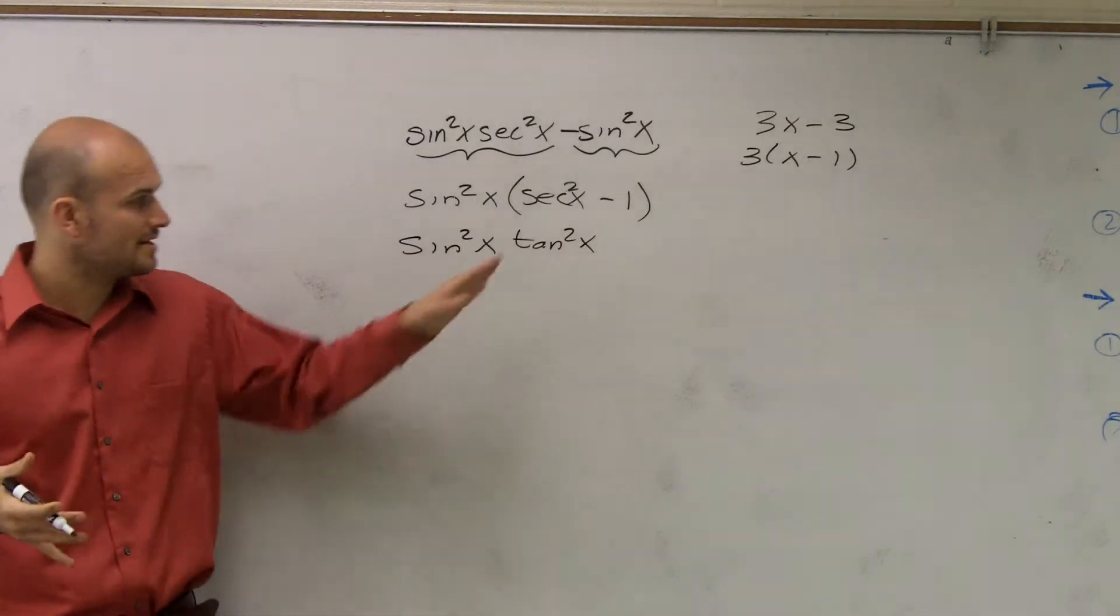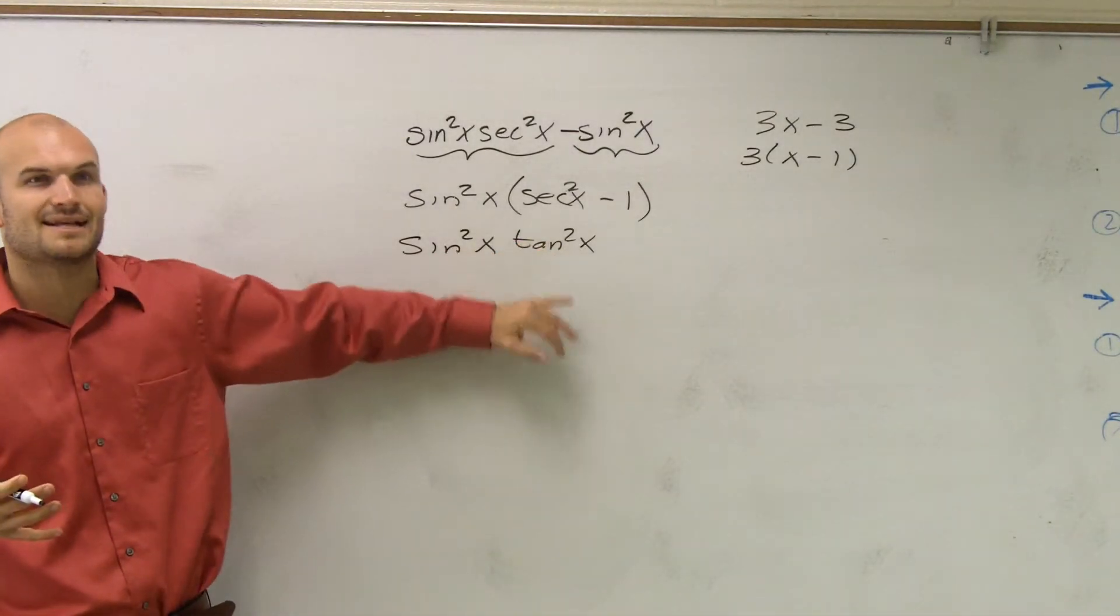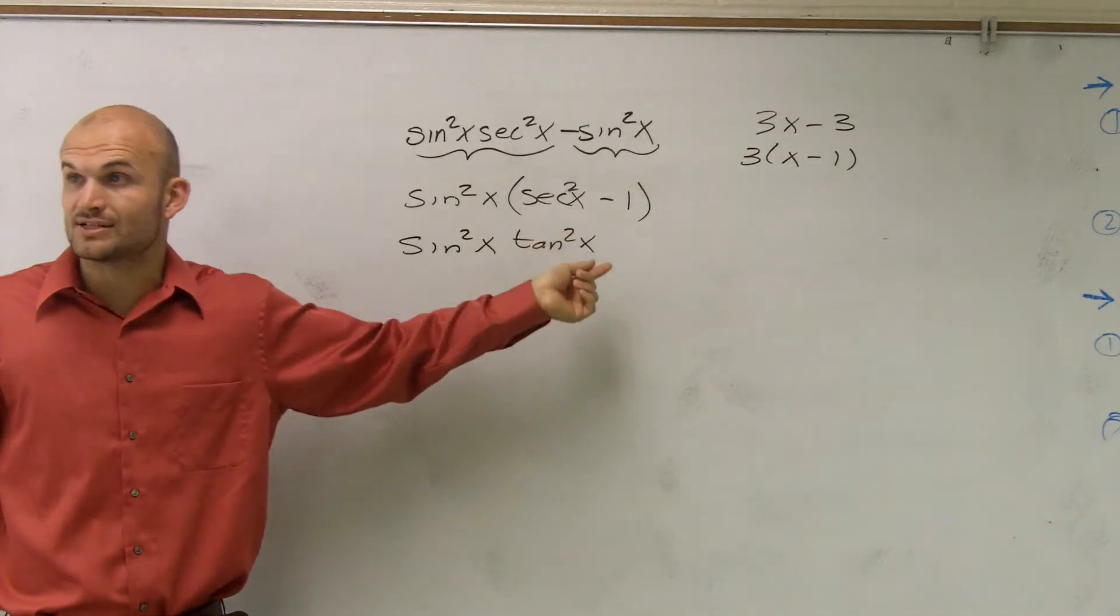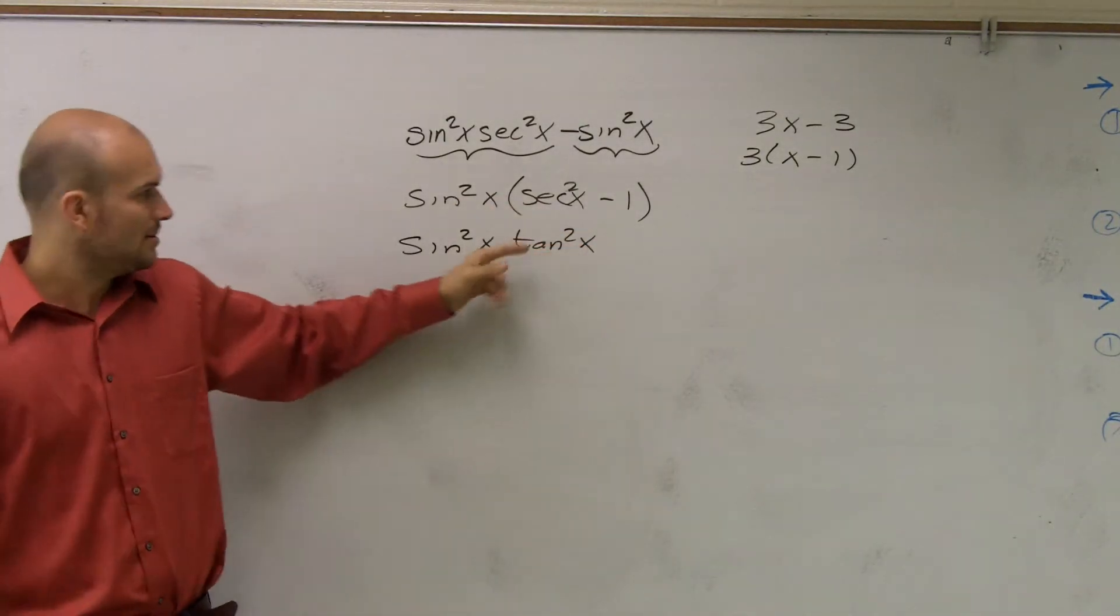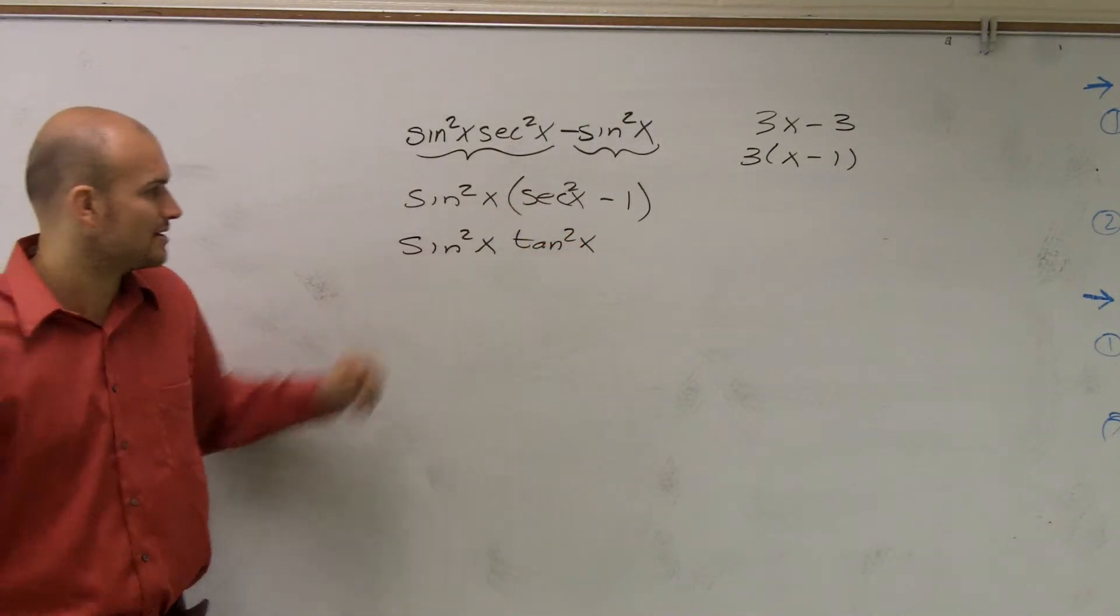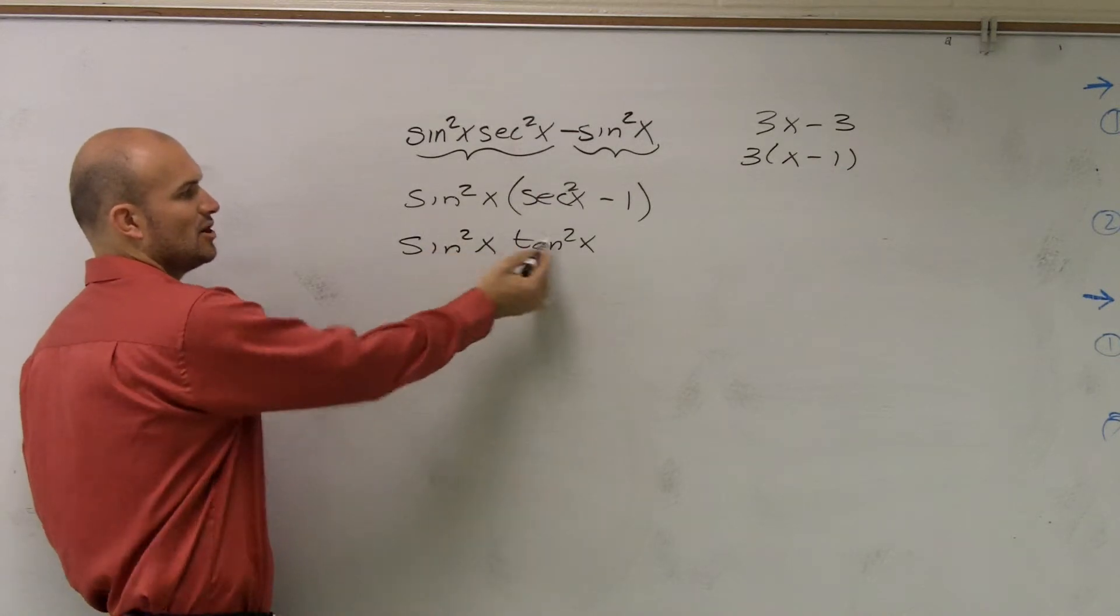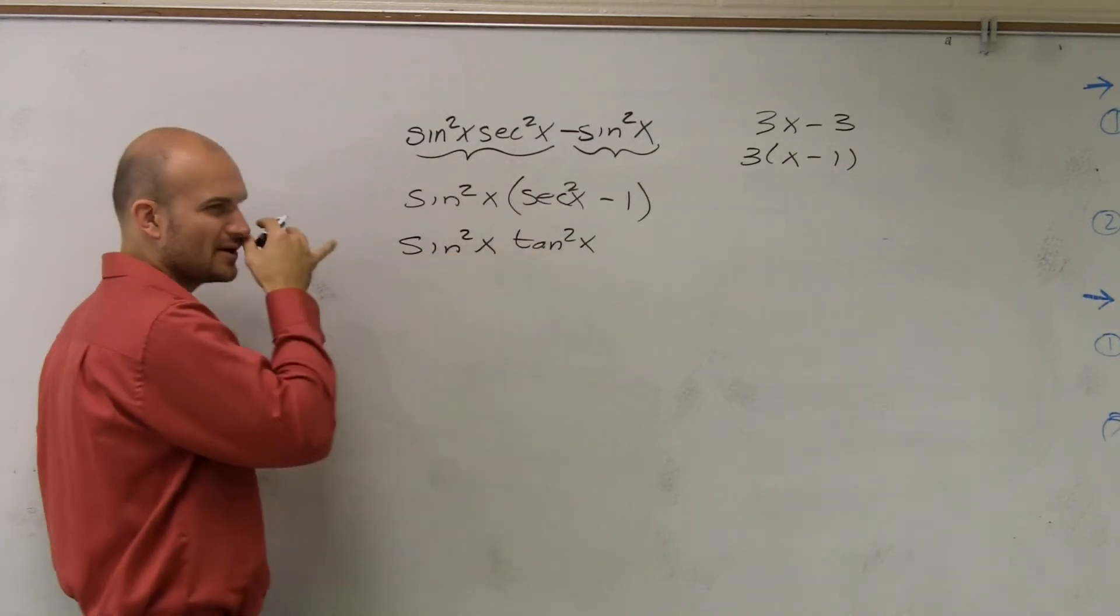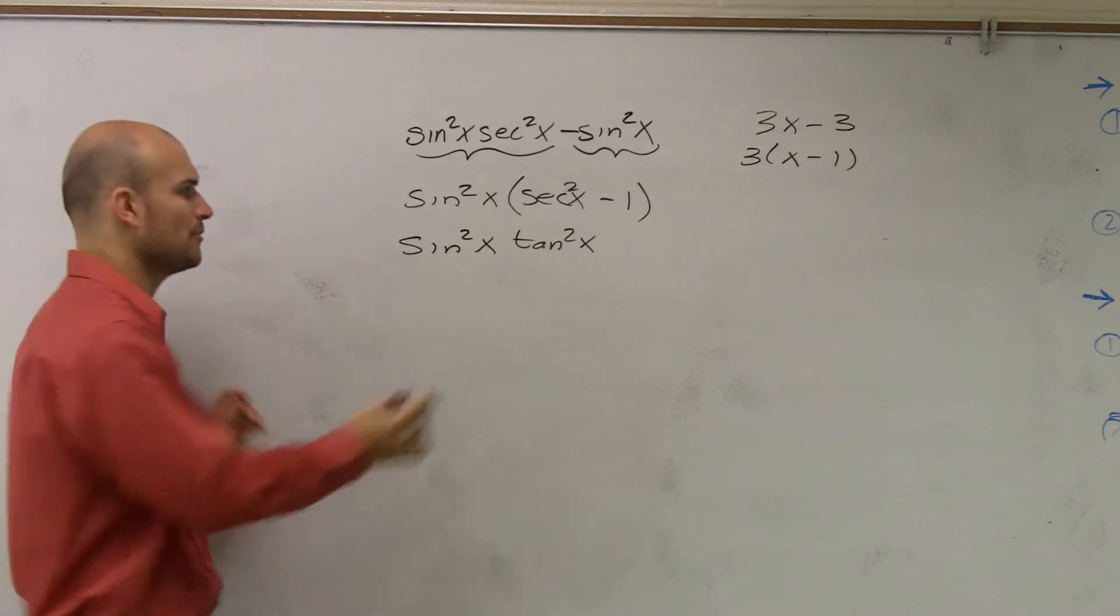Now, the next thing I would look for is to see, all right, well, can I reduce tangent to anything else? And you could write tangent as cosine squared over sine squared, right? I'm sorry, sine squared over cosine squared. Well, then I'm just going to be multiplying sine squared times sine squared. That's really not going to simplify my answer anymore. Let me go and prove my point.